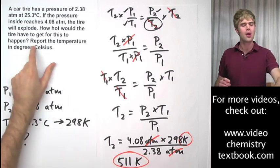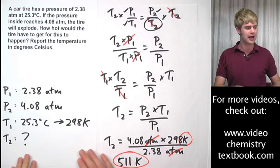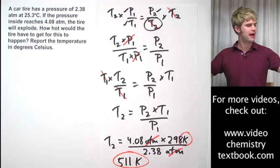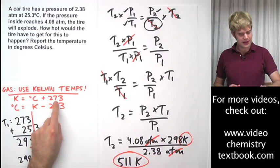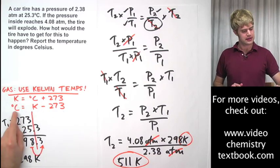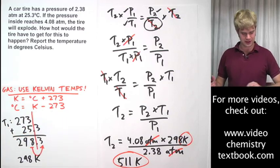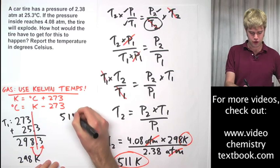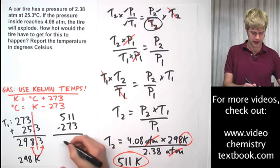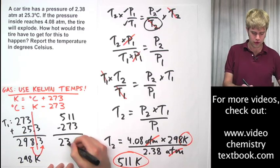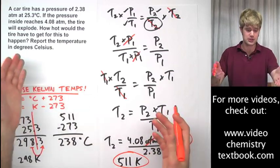But we're not done, we're not done. Because the problem asks us to report the temperature in degrees Celsius, not in Kelvin. So let's go back here and look at how we do that. Well, we added 273 to the Celsius to get Kelvin. To get the Celsius, we'll take the Kelvin temperature and we'll subtract 273. So we're going to take 511 minus 273 and we're going to get 238 degrees Celsius. Darn that's hot, but it's possible. It's possible for a tire to get that hot. It's unlikely, but it's possible.